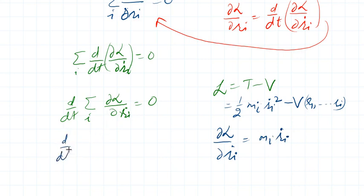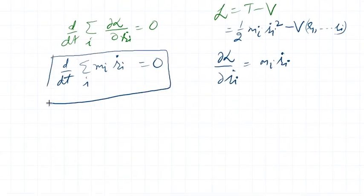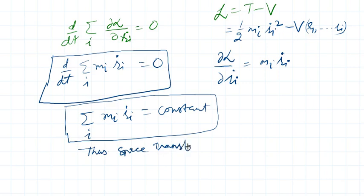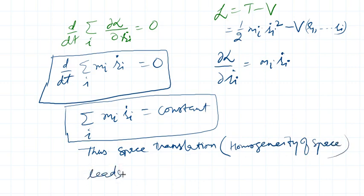Substituting this value, I can say that d/dt of the summation over i of m_i r_i dot equals zero. This is possible if and only if the term summation of m_i r_i dot is equal to a constant — it is a constant of motion. Thus space translation, which is a consequence of homogeneity of space, leads to the law of conservation of linear momentum.